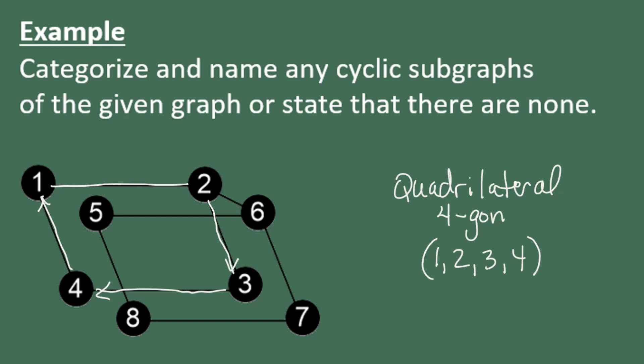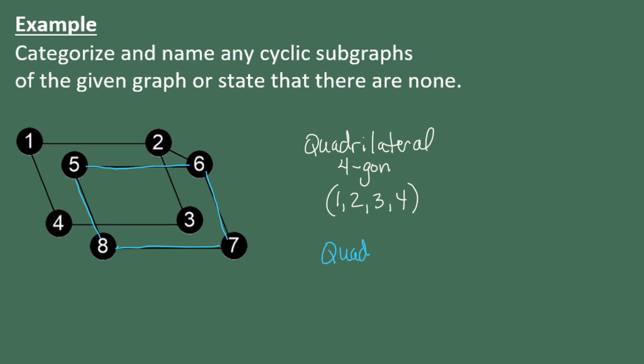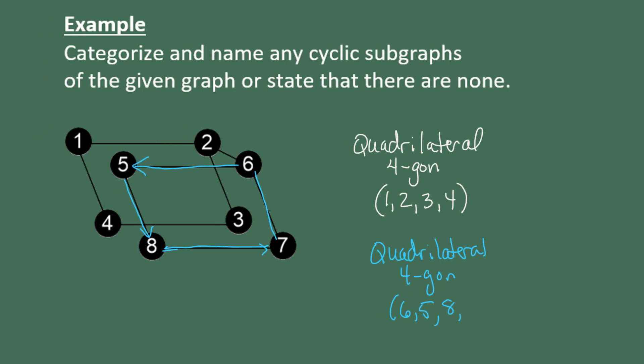Let's see if we can find another one. So another one that might stand out to you is from five to six, six to seven, seven to eight, and eight back to five again. This is another quadrilateral or fourgon. This time I'm going to name it starting at vertex six, and I'm going to go counterclockwise just to demonstrate that that's still a perfectly fine way to name the cyclic subgraph. So we're going to go from six to five, and then to eight, and then to seven, and then back to six. So I'm going to put a parenthesis.